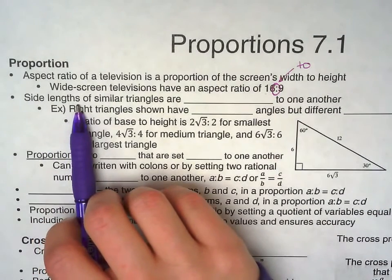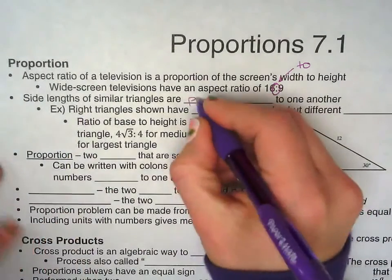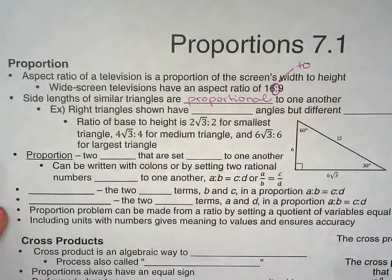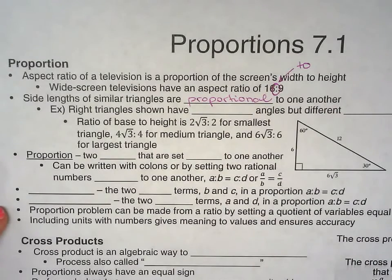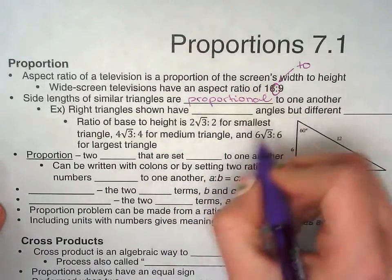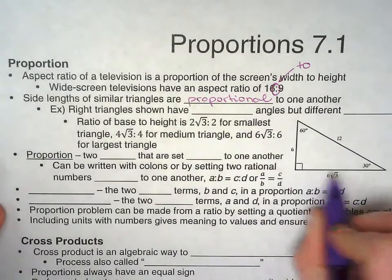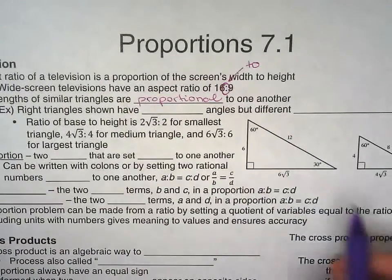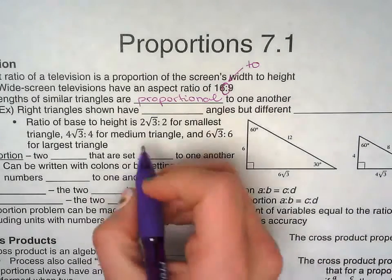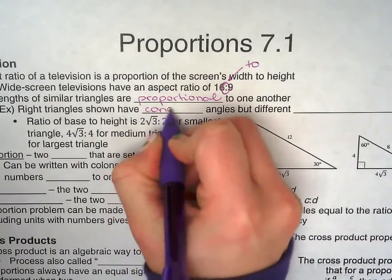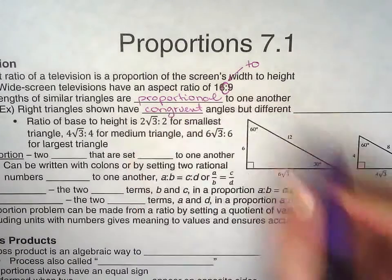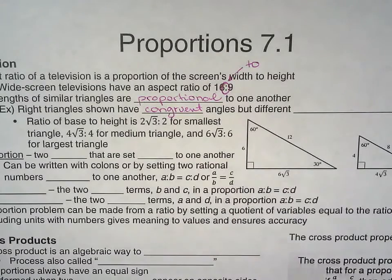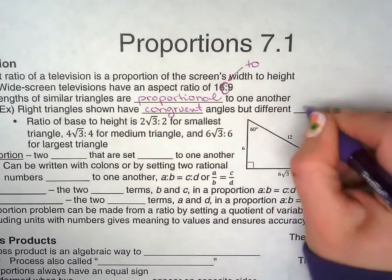Now the side lengths of similar triangles are proportional to one another. Right triangles shown have congruent angles. These triangles are congruent on the angles, so they're all 60, 30, 90, but they do have different side lengths.